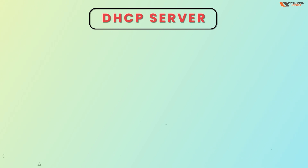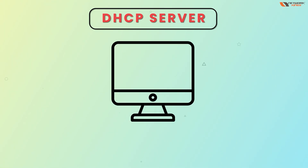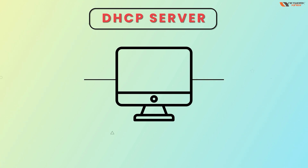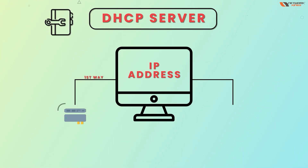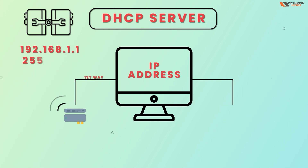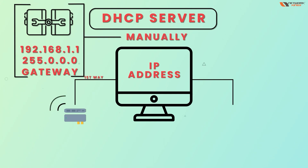DHCP service is used for IP address assignment. On a PC, there are two ways to define an IP address. The first way is manually — you go into your Ethernet or Wi-Fi adapter and manually assign an IP address, subnet mask, and gateway.